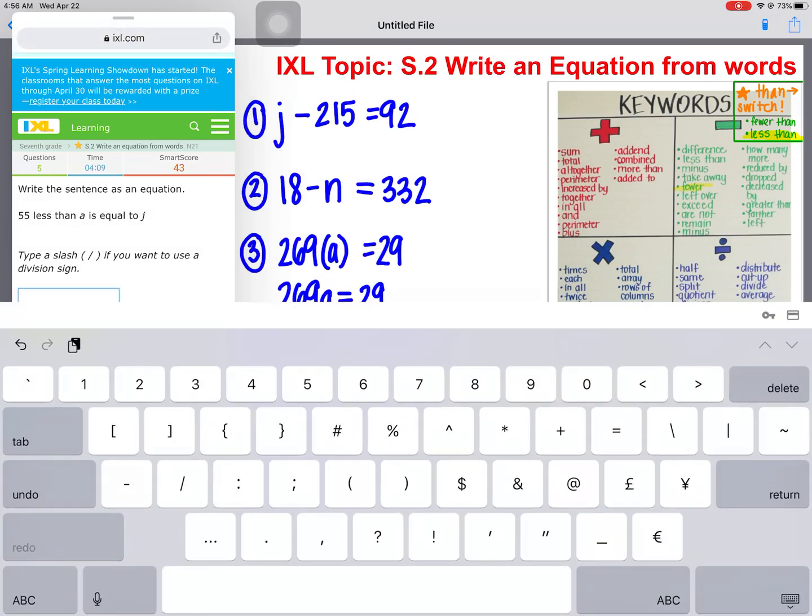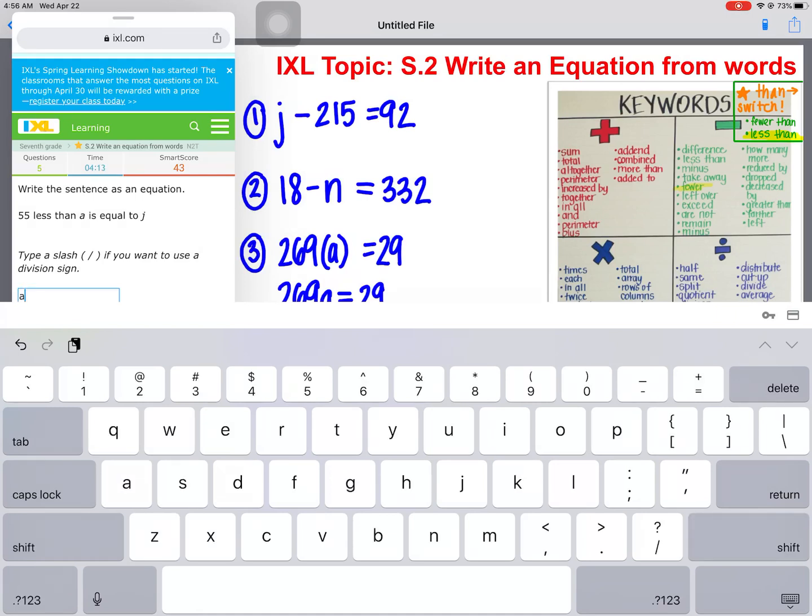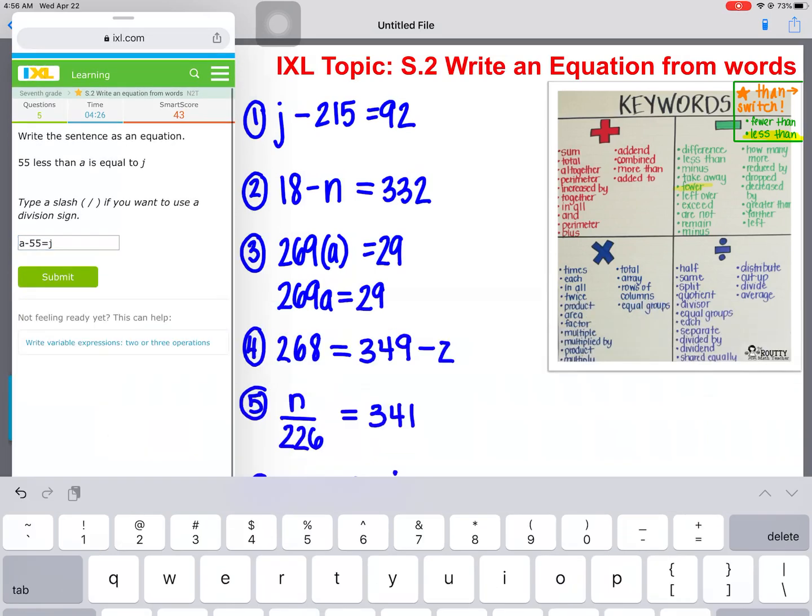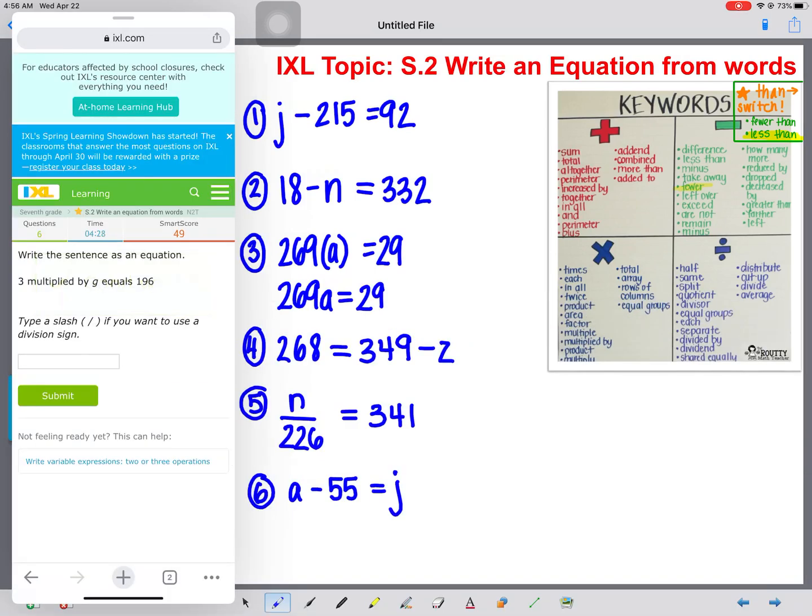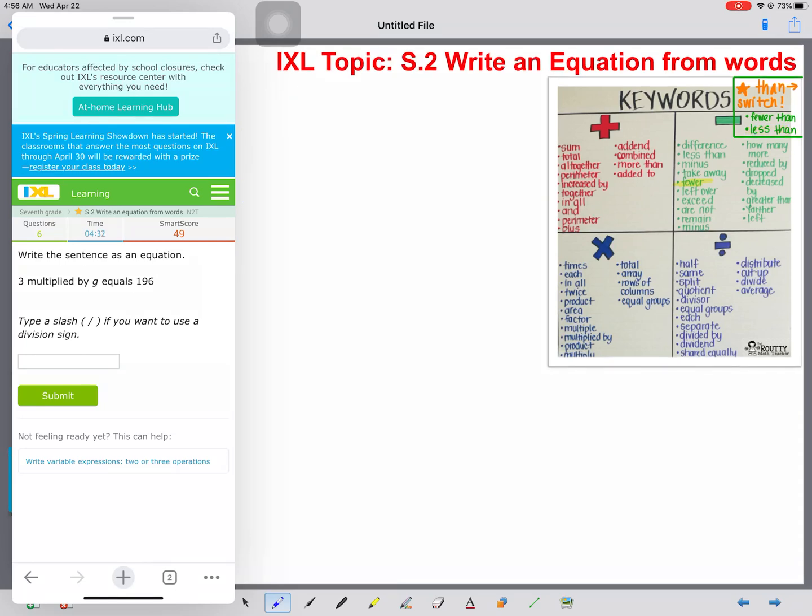So we're just rewriting it exactly how we see it. Everywhere we can turn a word or phrase into an operation symbol, we're doing that. So A minus 55 equals J. Submit. Good work. Okay, let's do just a few more before you are free to work by yourself.